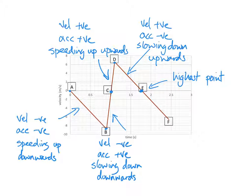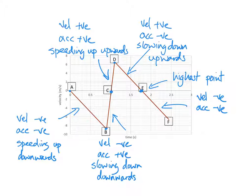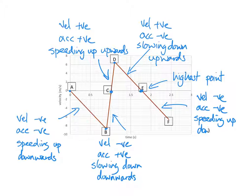When the velocity changes from positive going up to negative going down, the ball is now moving back down. In this last section between E and F we have negative values of velocity below the axis, the line is sloping down so the acceleration is negative — we're back to the first section all over again, speeding up downwards. At F it hits the ground again and this whole process could repeat.